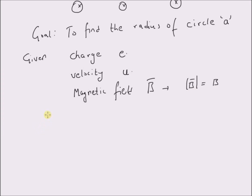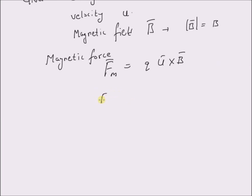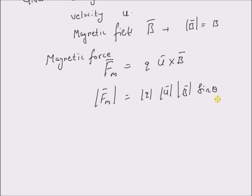By using the formula for magnetic force, F_m = q(u-bar × B-bar), the magnitude of this force is given by q multiplied by the magnitude of u and the magnitude of B-bar, multiplied by sine of the angle between the magnetic field and the direction of the particle. In this case it is given to be 90 degrees, so sine theta equals 1. Therefore, the magnitude of the force is equal to e multiplied by u times B.